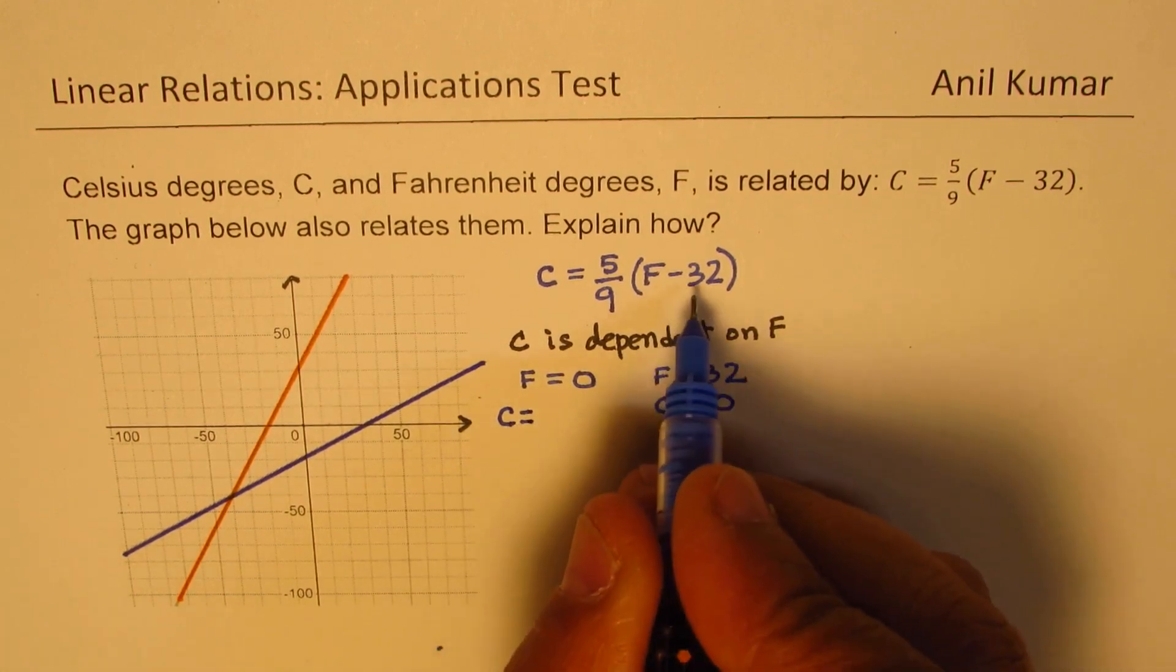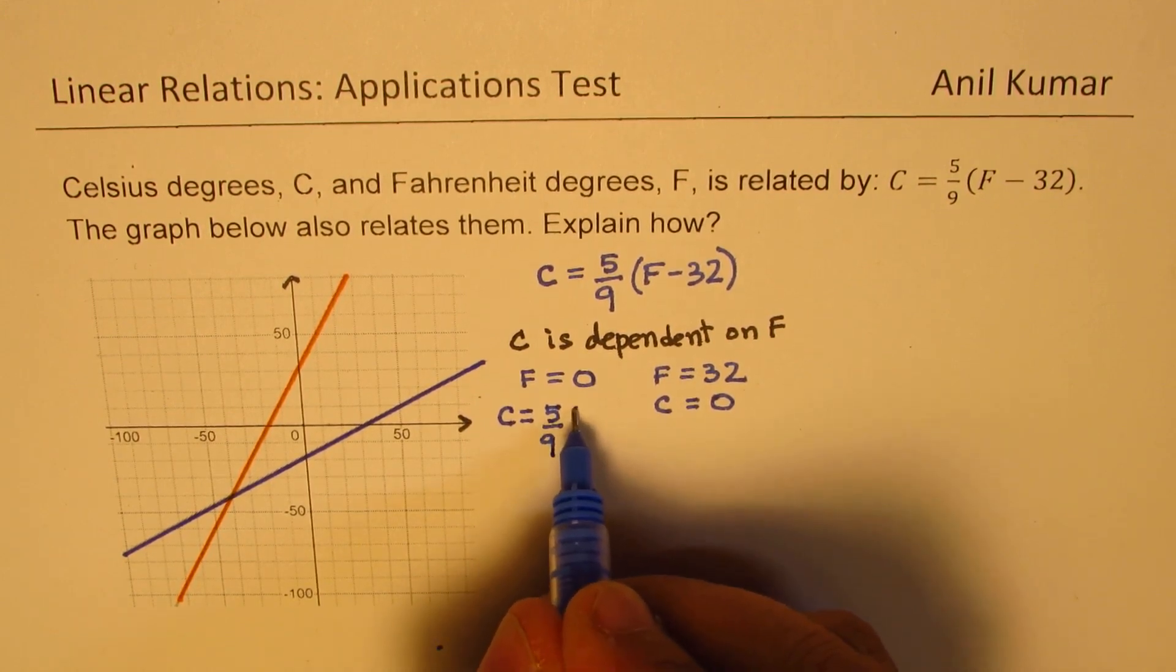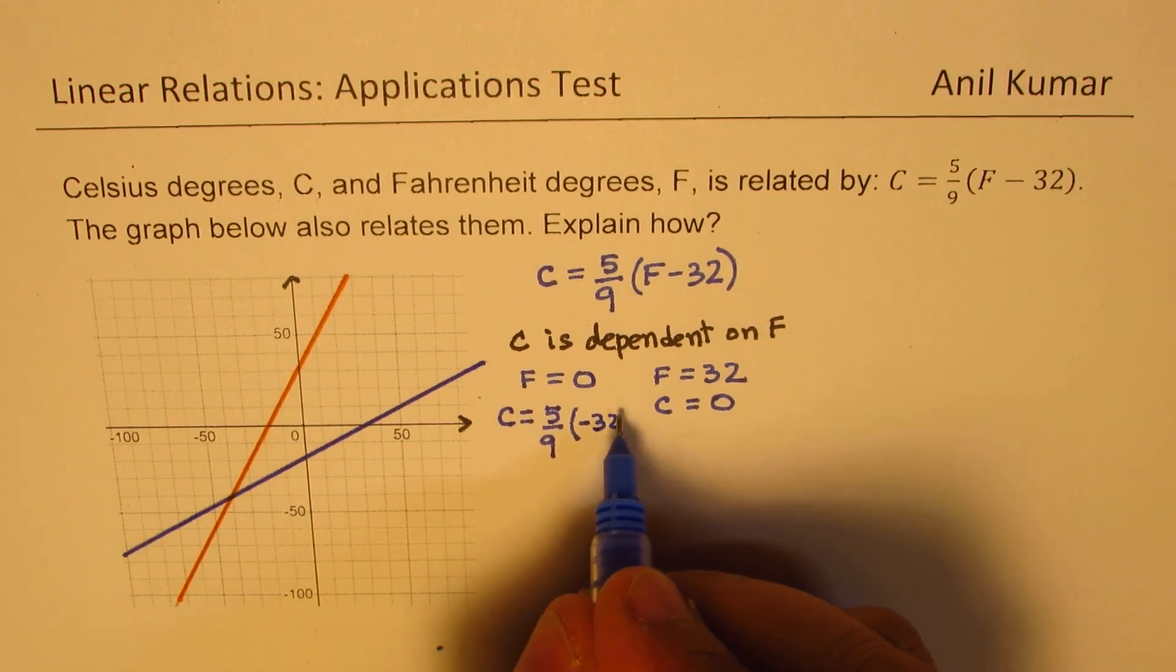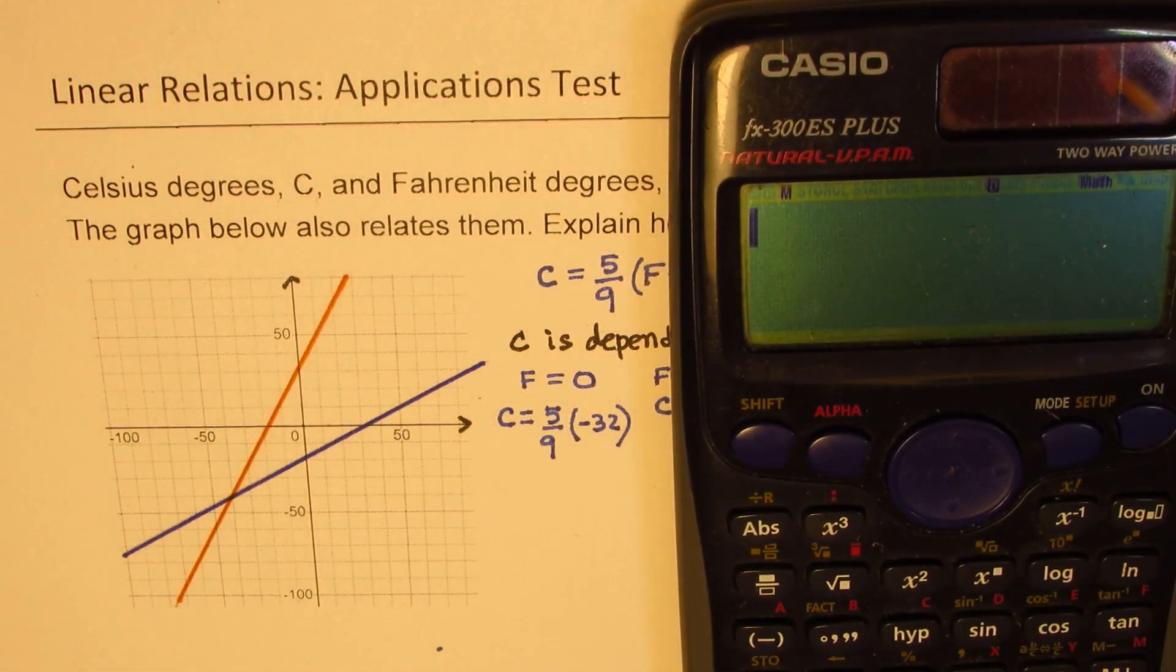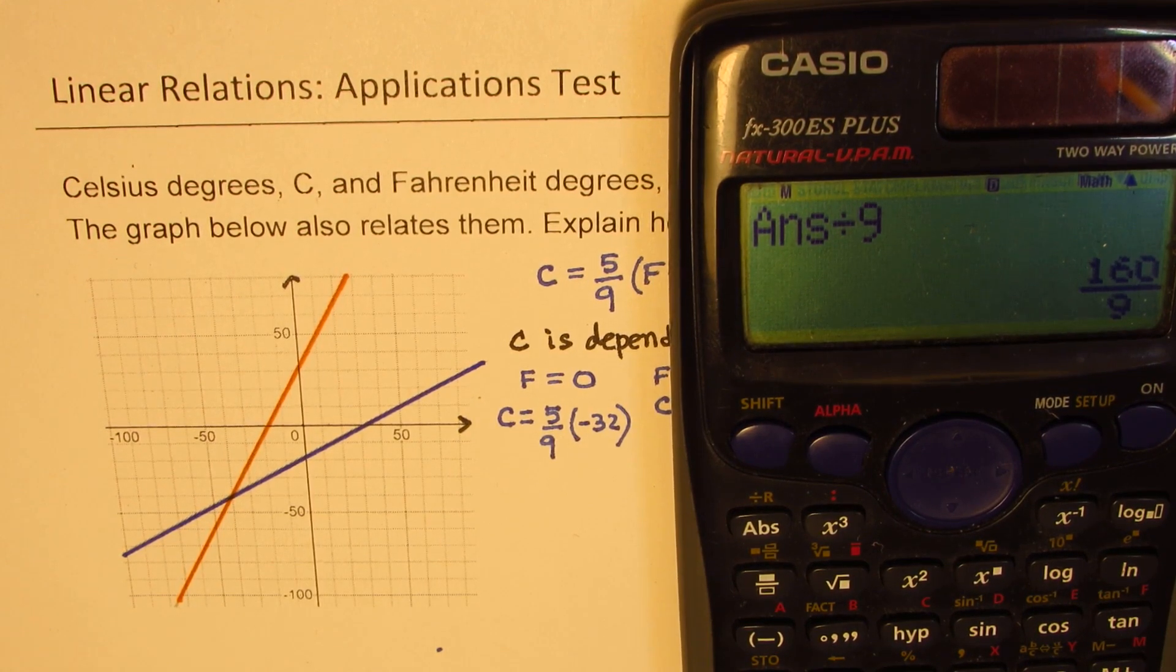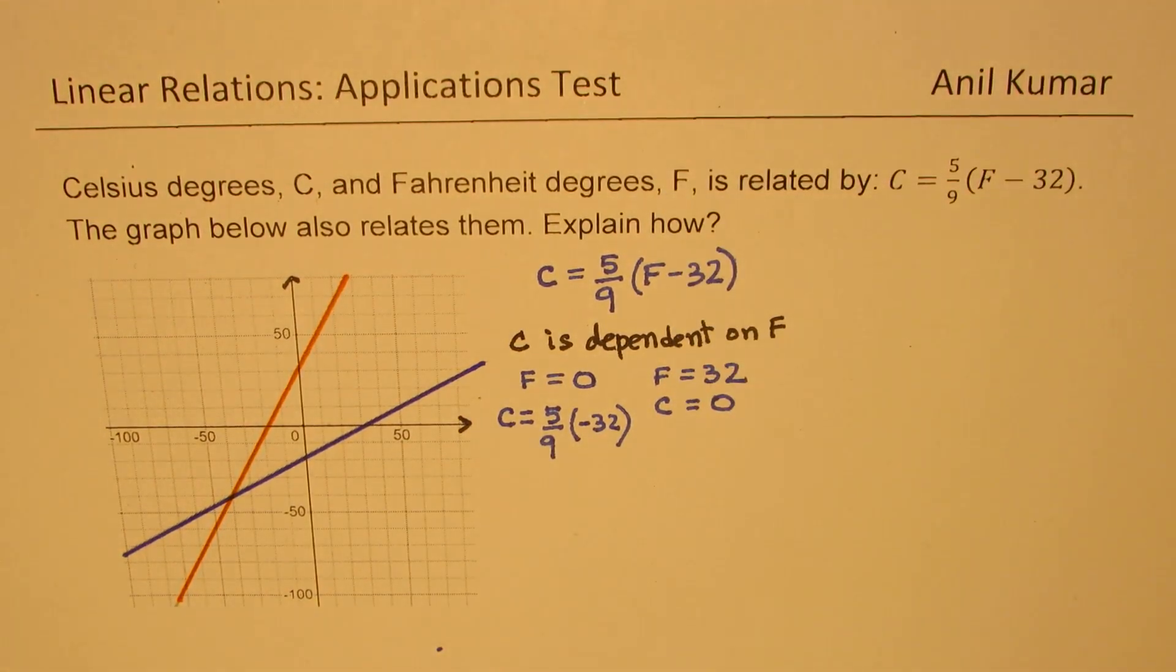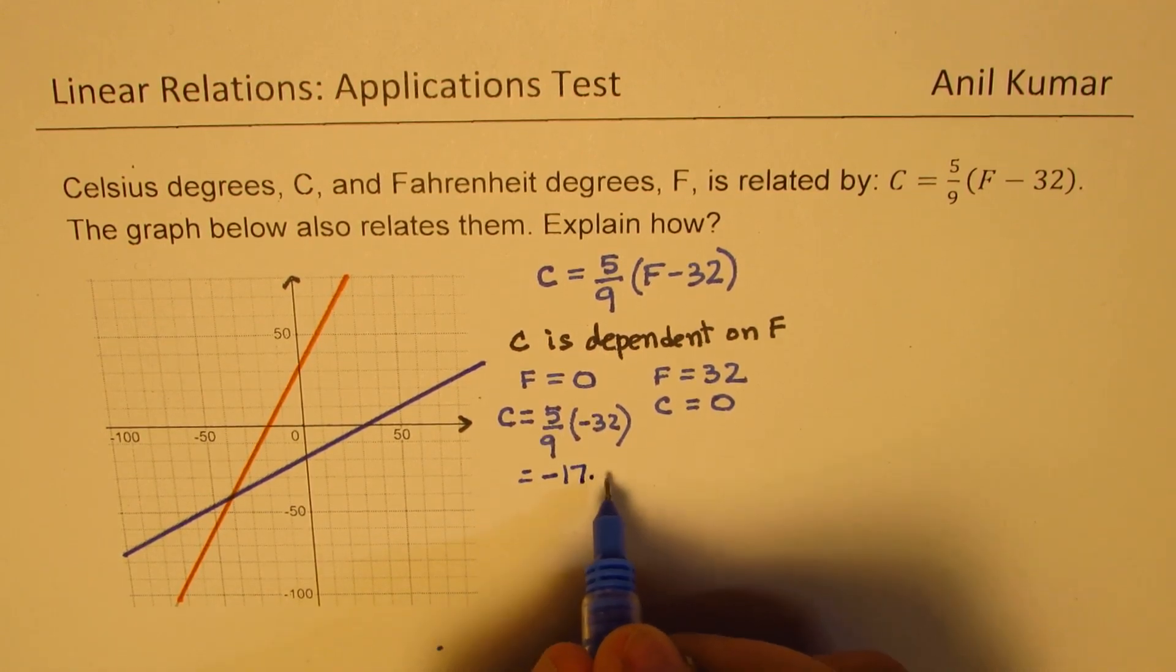If F is equal to 0, then C is equal to 5 over 9 times minus 32. Let's use calculator and find this answer. We will multiply 5 by 32 and then divide by 9. We know it is a negative sign. Approximately in decimal values, we get 17.77. That is minus 17.78.